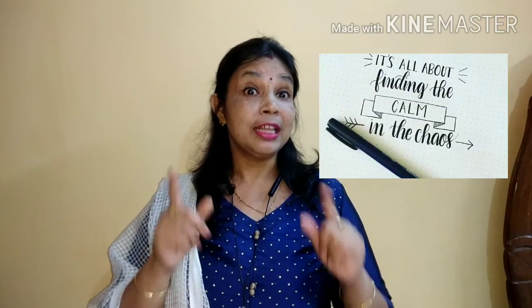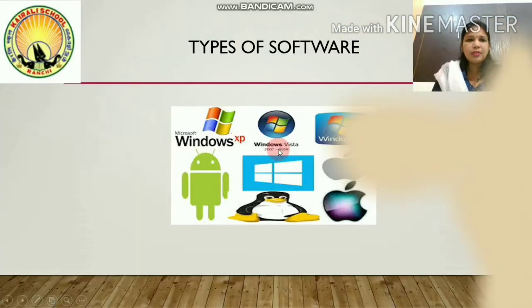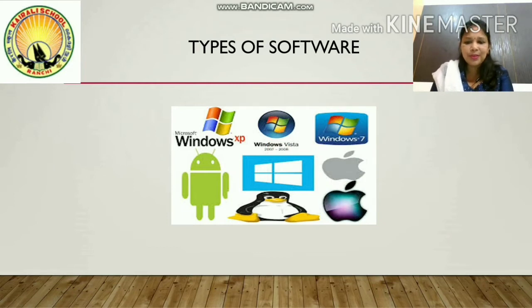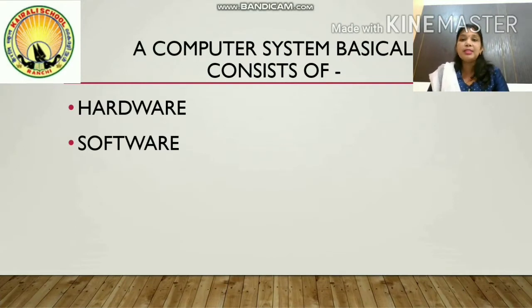That way only we can get success. So let's start with today's chapter — Types of Software. Don't forget, this is the time to find calm in all these circumstances. Before starting the different types of software, I want to make you understand that basically a computer consists of two parts: hardware and software.